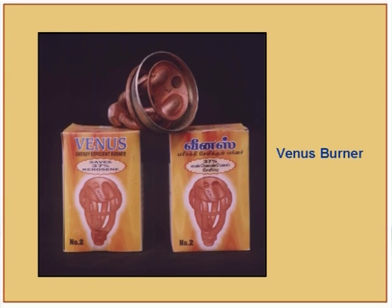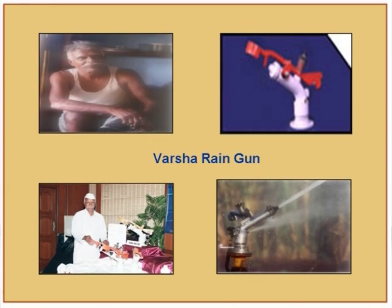The Venus Burner is another simple innovation — a much more efficient kerosene burner. Unlike what many might think, kerosene is still a major fuel across India. Anna Sahib Udgawe, a farmer in Sadal Kam, a village on the borders of Karnataka and Maharashtra, faced a drought and innovated the rain gun — an irrigation device that uses groundwater to irrigate fields, saving water by almost 50%.